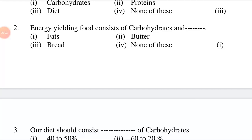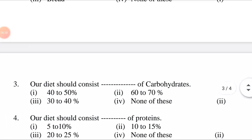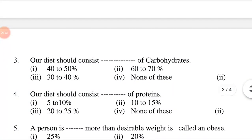Options for question 2: first, fats; second, water; third, bread; fourth, none of these. Answer is first option: energy yielding food consists of carbohydrates and fats. Question 3: Our diet should consist ___ of carbohydrates.